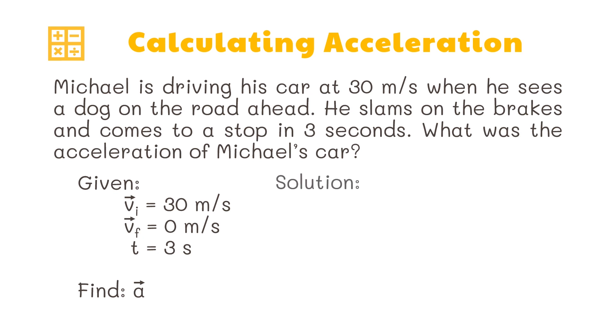The formula for acceleration is velocity over time. Since we have both the final velocity and initial velocity, we need to subtract the final velocity from the initial velocity first before we can divide it with the time. So 0 minus 30 meters per second divided by 3 seconds equals negative 10 meters per second squared. This means that the car slows down at the rate of 10 meters per second every second. This negative acceleration is known as deceleration.